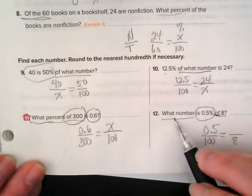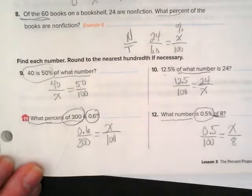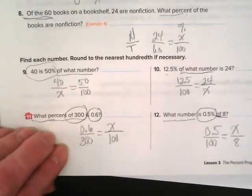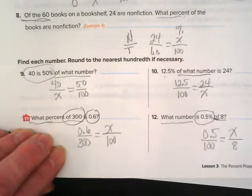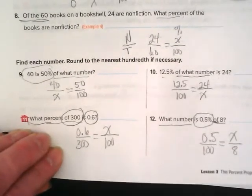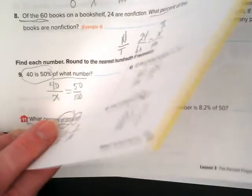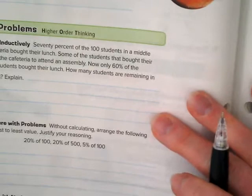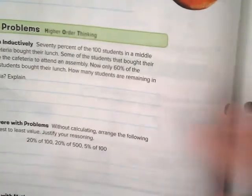Number 9 says 40 is 50% of what number? Of what number means our unknown is going to be down here. 40 is the 50%. So this right here is telling me that 40 and 50 are the part. This is 50%, so it's 50 over 100.